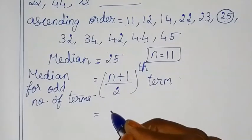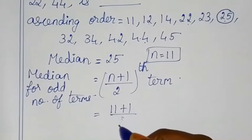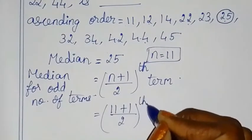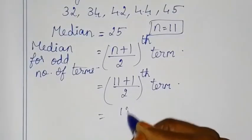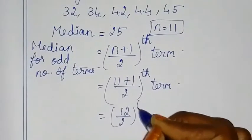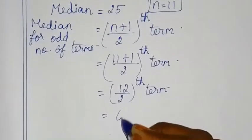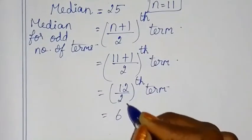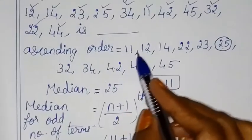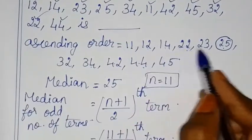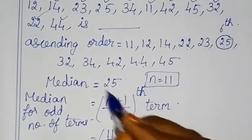So median = (n+1)/2 th term = (11+1)/2 th term = 12/2 th term = 6th term. The 6th term is 25, so the median is 25.